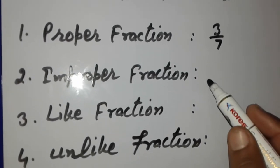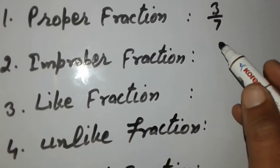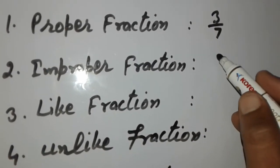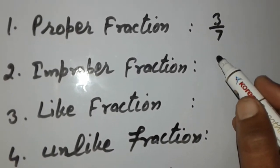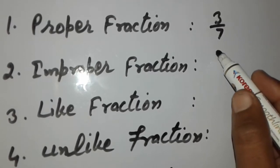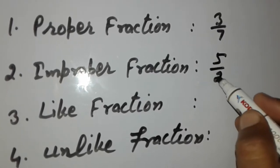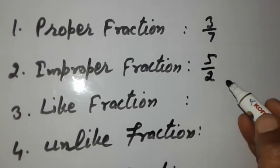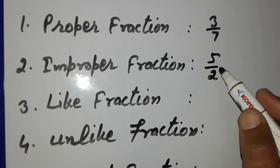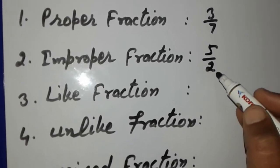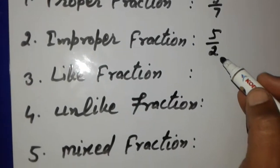Secondly, improper fraction — in which the numerator is greater than the denominator. For example, five upon two is an improper fraction. Here five is greater than two, that is, the numerator is greater than the denominator.